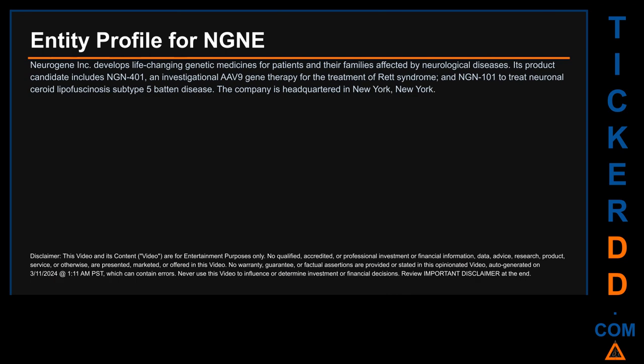Hello, my name is Carl. I searched the public web to find information about the company behind this ticker. Here is what I found: Neurogene Inc. develops life-changing genetic medicines for patients and their families affected by neurological diseases. Its product candidates include NGN-401, an investigational AAV9 gene therapy for the treatment of Rett syndrome, and NGNE-101 to treat neuronal ceroid lipofuscinosis subtype 5, Batten disease. The company is headquartered in New York, New York.